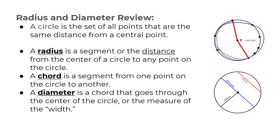A chord is a segment that connects any two points on the circle — it's not going to be that important for today. This chord in red connects two points on the circle. A chord that goes through the center, like this blue line, is the diameter. The diameter really measures the width of the circle — it goes through the center.